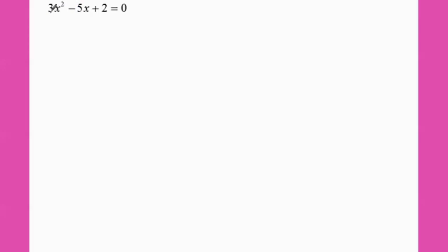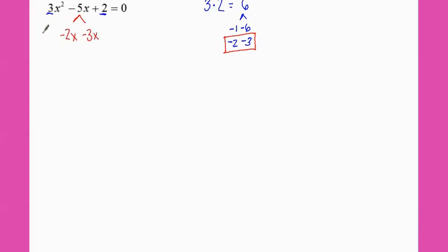In other cases we need to get those factors first. So we're going to multiply a and c: three times two equals six. Factors of six are one and six, or two and three. Since we multiplied to a positive and we want to add to a negative, both terms will be negative. Which pair adds up to negative five? That's negative two and negative three. So we write negative two x minus three x, bringing down the three x squared and the plus two.